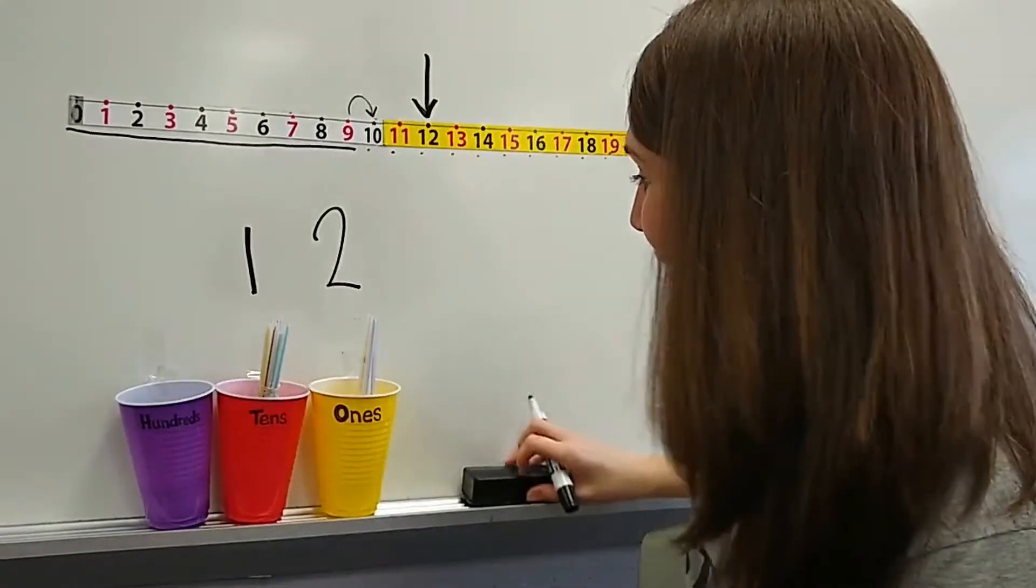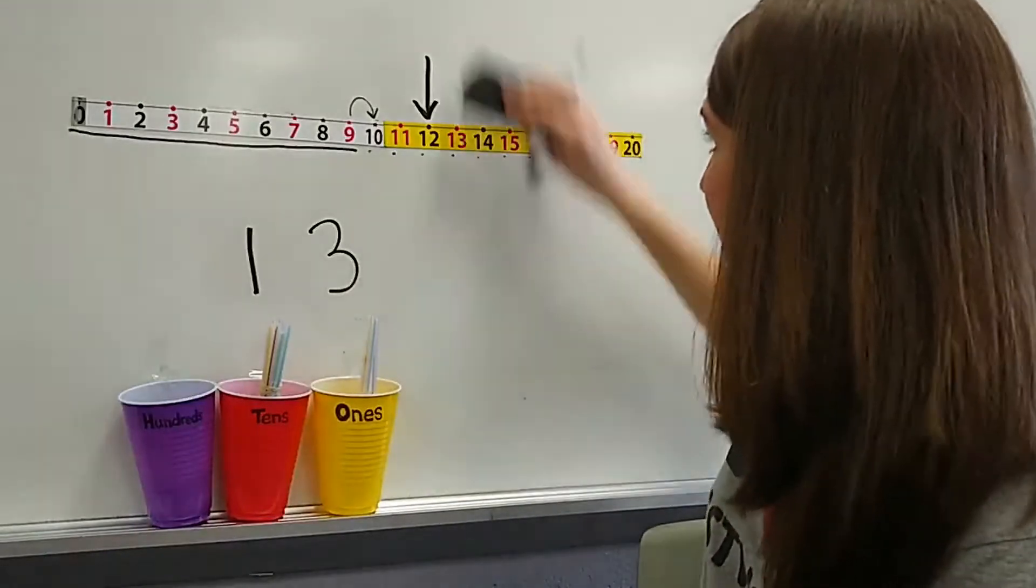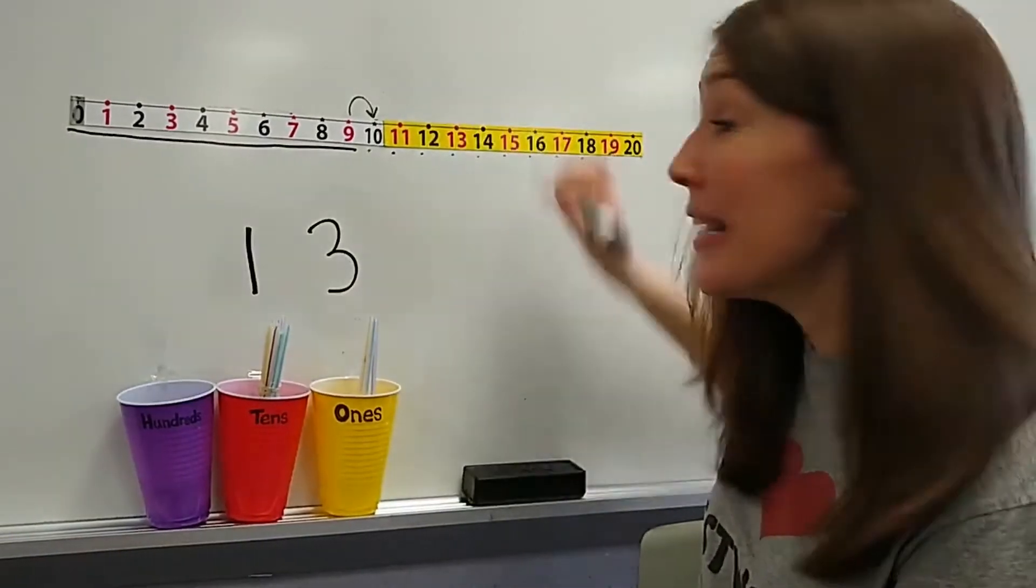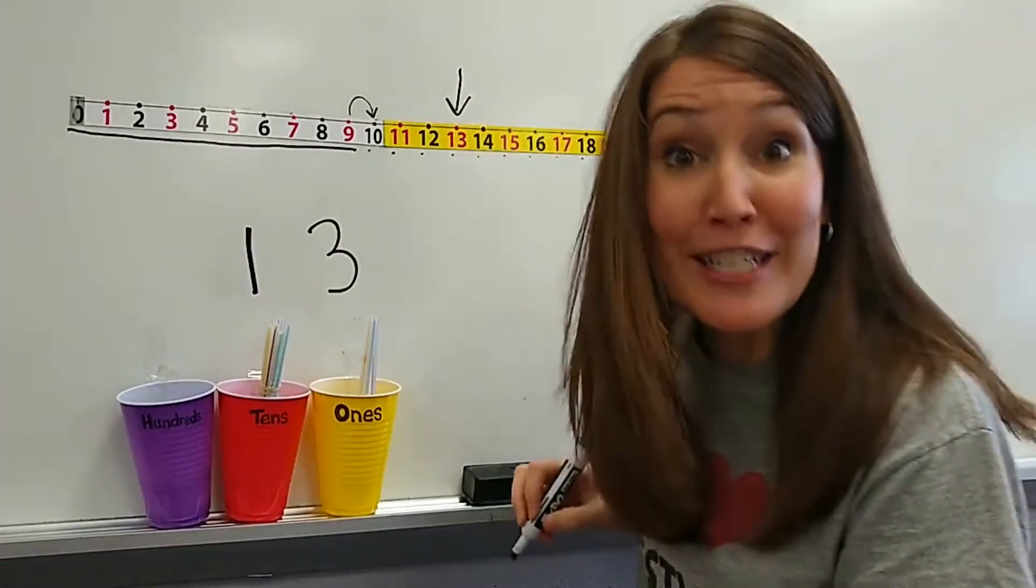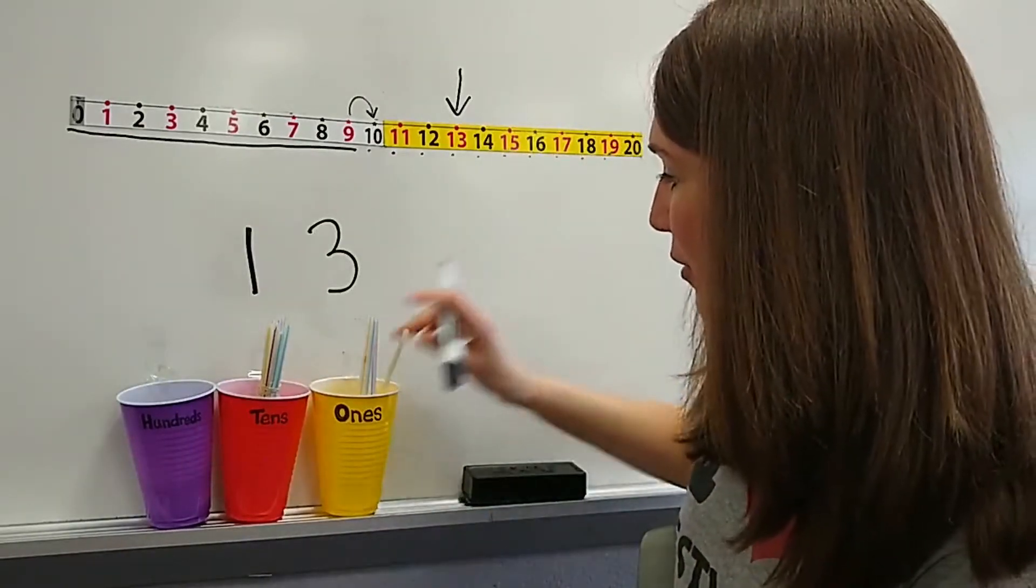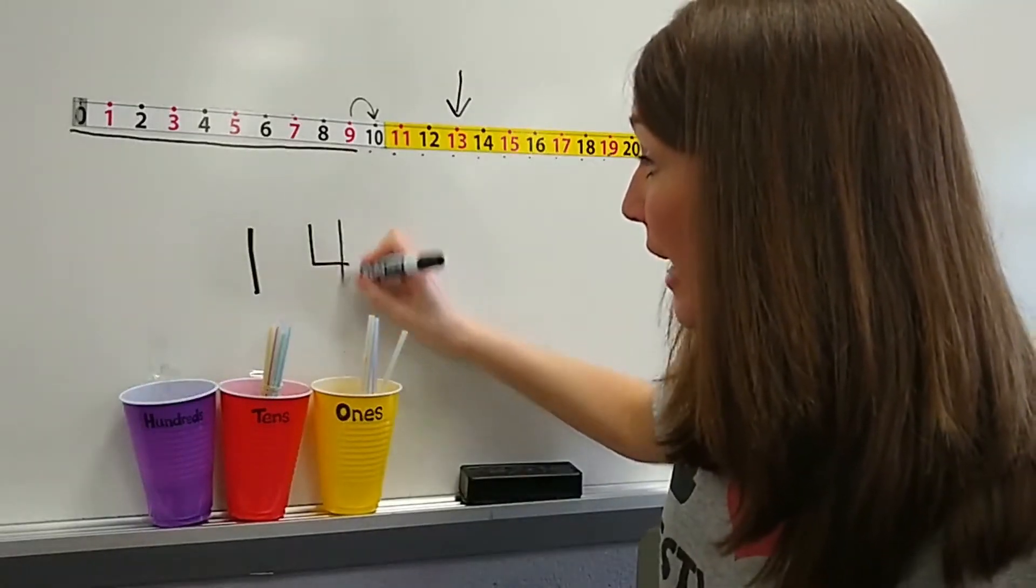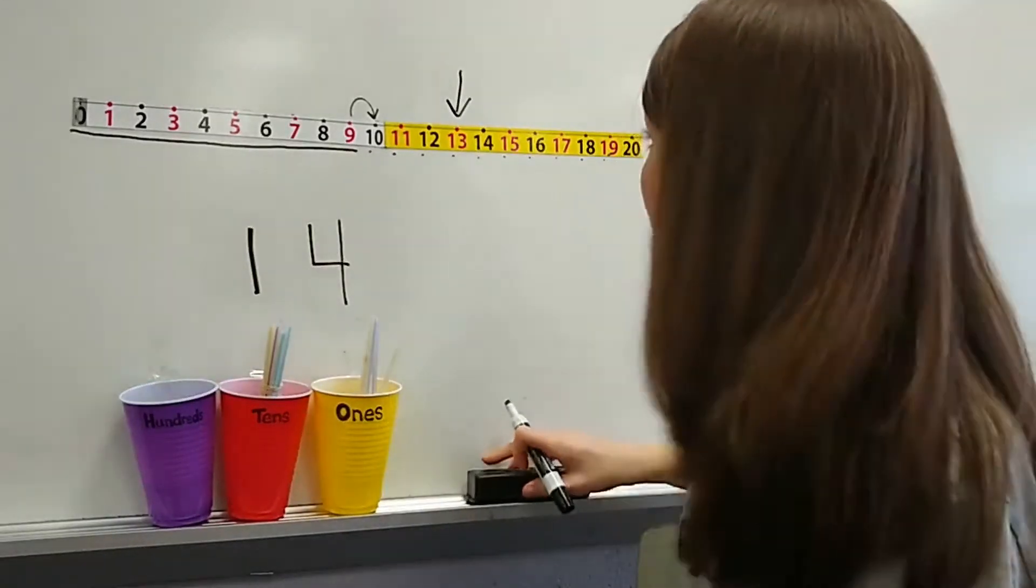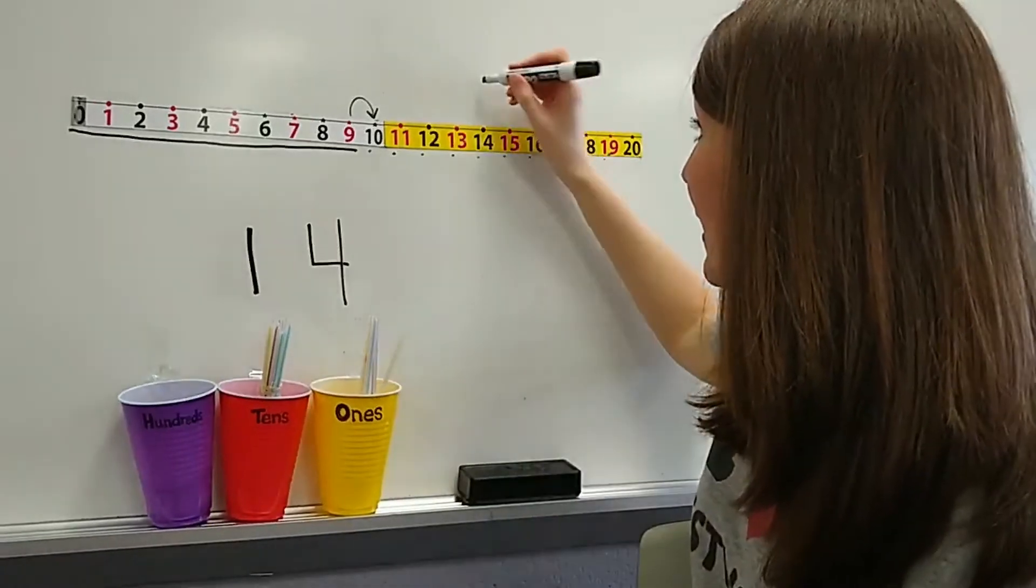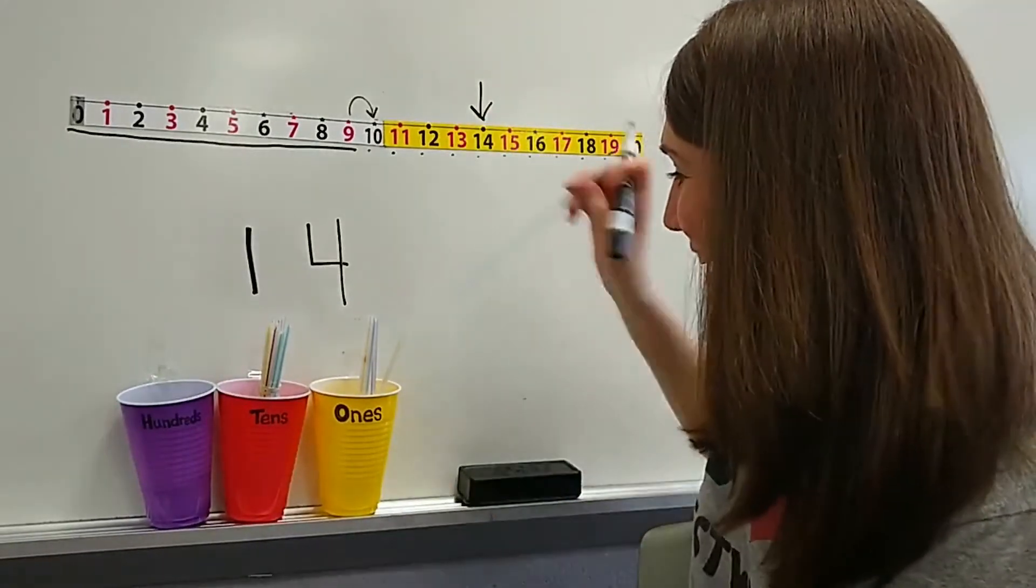Let's add another one. One group of 10 and three little ones. My number is 13. You're getting the hang of it. Good job. If I add another to the ones cup, I have one group of 10 and four little ones. My number is 14. Good job.